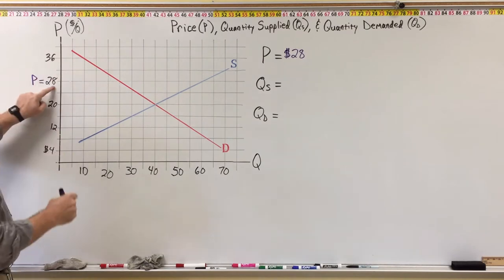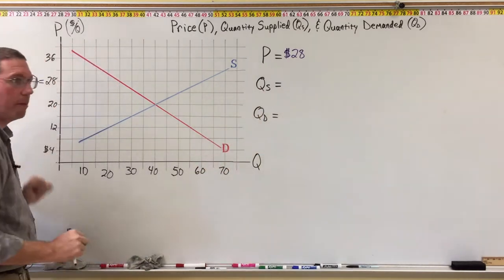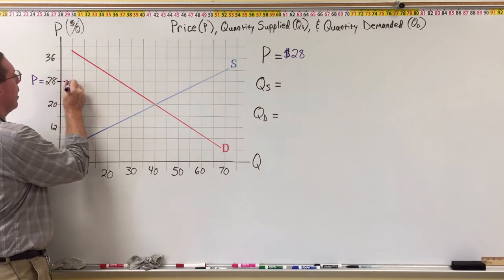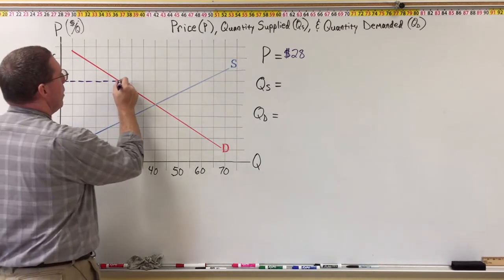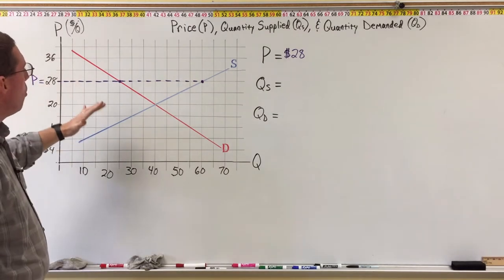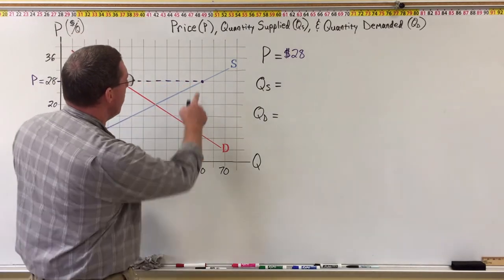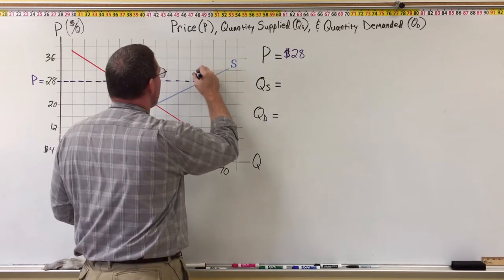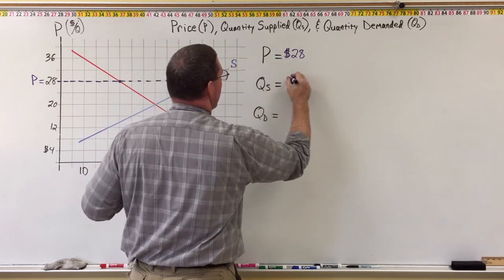At a price of $28, go ahead and pause the video to figure out the quantity supplied and quantity demanded. So I'll draw a dashed line across. Where the price of $28 hits the supply curve, we go vertically down to the quantity axis and we see a quantity of 60. So at a price of $28, quantity supplied is 60.